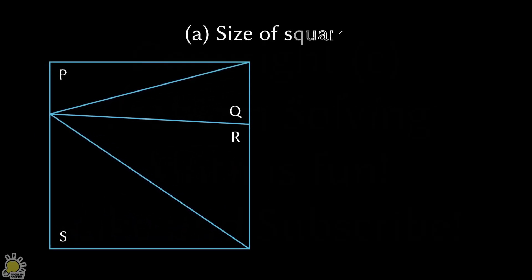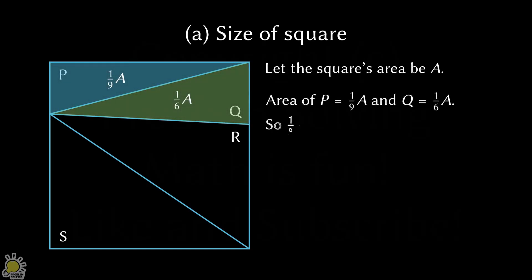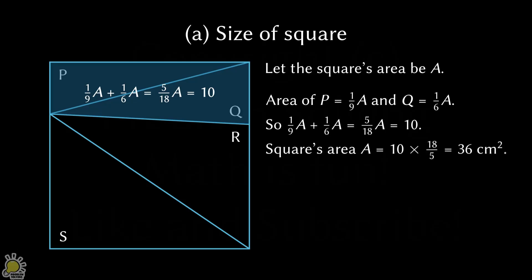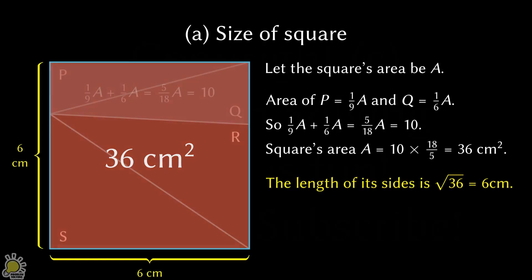Let's start with Part A. Let the square's area be A. We know that P is one-ninth of A, and Q is one-sixth of A. Adding them up, we deduce that five-eighteenths of A is 10 centimeters squared. So its area is 10 times 18 divided by 5, which is 36 centimeters squared. Thus, the length of its side is 6 centimeters. That answers Part A.